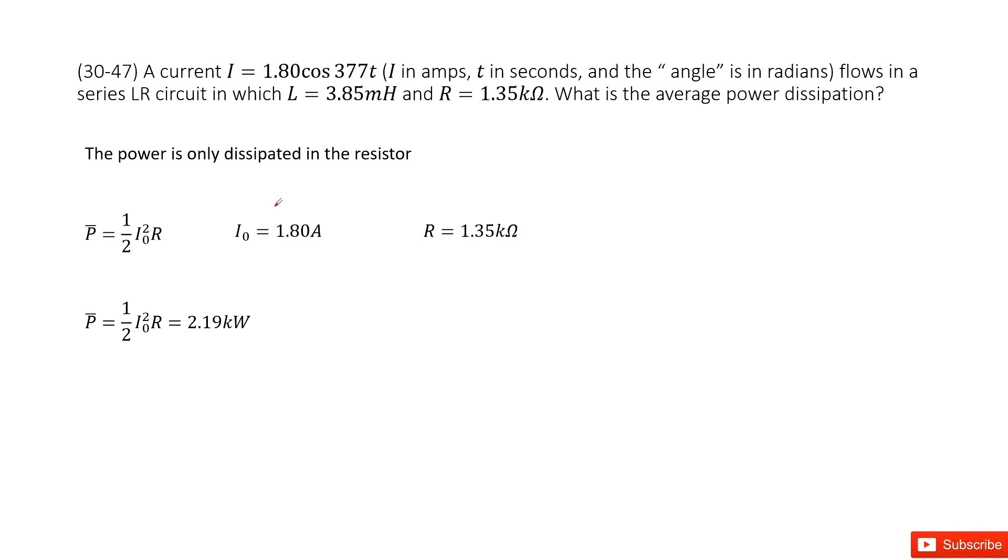So we have an RL circuit with the resistor and inductors. Inductance and resistance are given in this circuit. And also the current in this circuit is a function with a cosine function with time t. What is the average power dissipation?